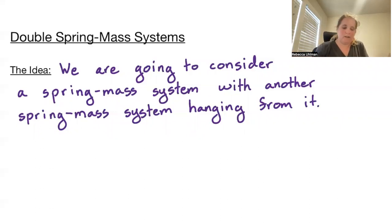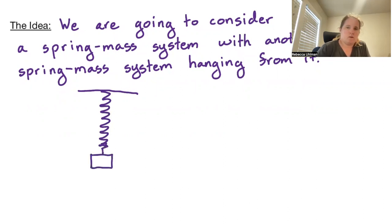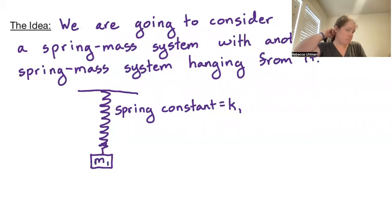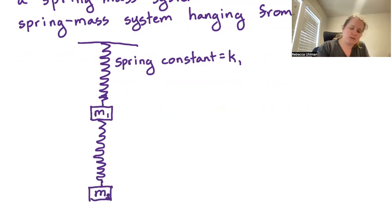We'll have our first spring-mass system hanging. This top one has spring constant K1, and the mass has mass M1 kilograms. Then we have another spring hanging from that mass, and we have a second mass on the bottom. That bottom mass will have mass M2 kilograms, and this spring will have spring constant K2.